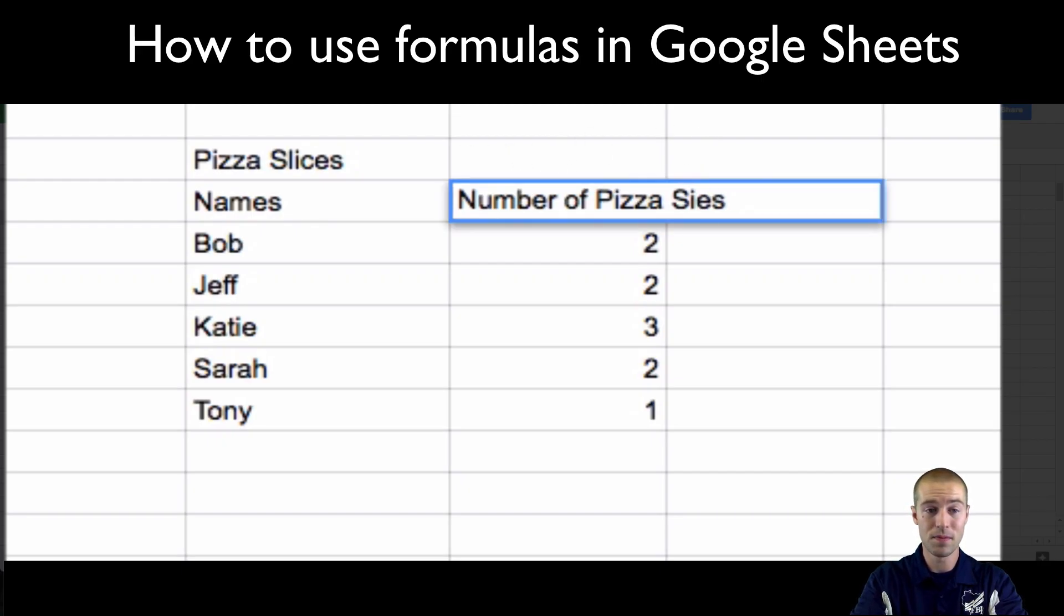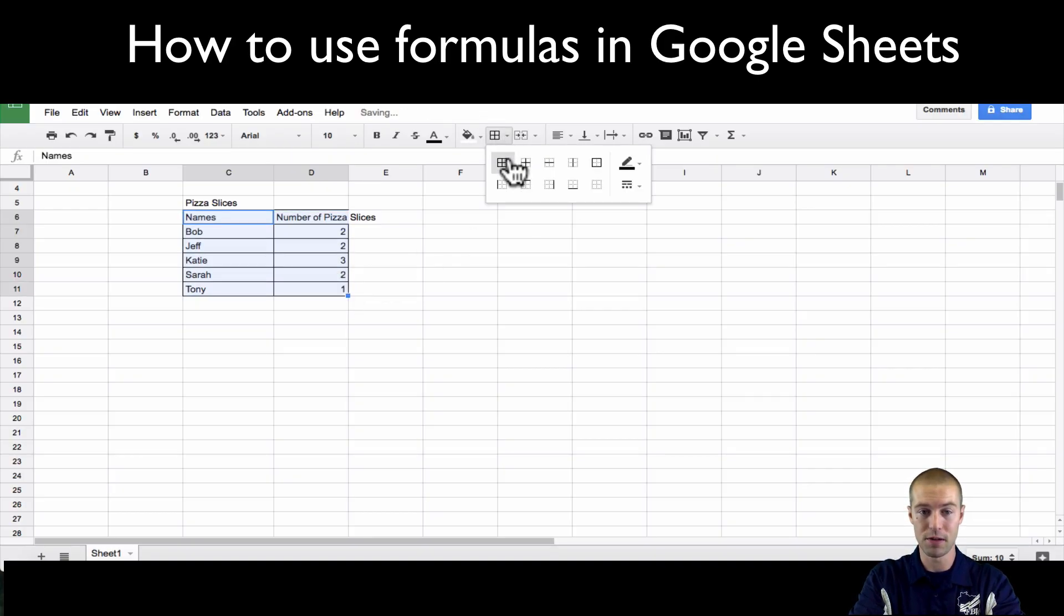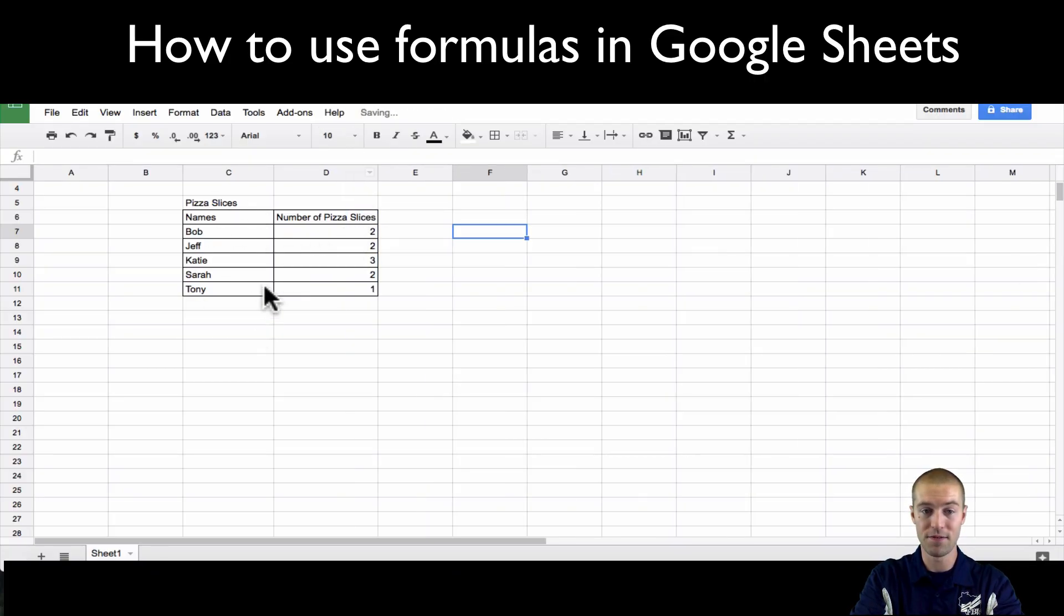The next thing we need to do is add some formulas to this information. So here's our table. We can go ahead and border this table if we want to make sure, hey, this table is really important. Now let's go ahead and use this little arrow key to make sure everything fits.